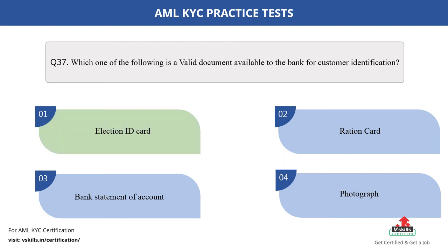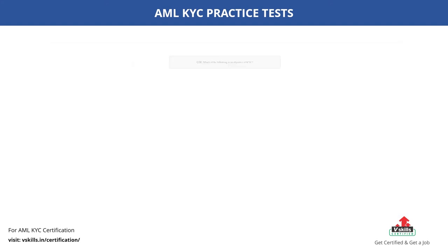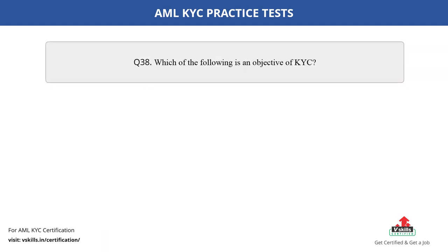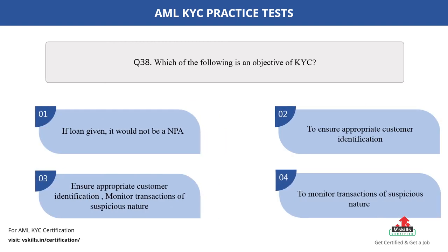Question number 38. Which of the following is an objective of KYC? The options are: A. If loan given, it would not be an NPA; B. To ensure appropriate customer identification; C. Ensure appropriate customer identification and monitor transactions of suspicious nature; D. To monitor transactions of suspicious nature. The correct answer is option D.